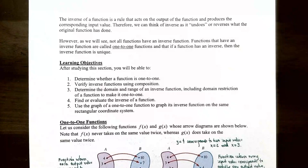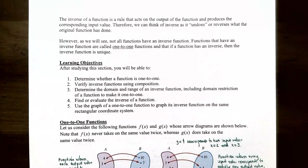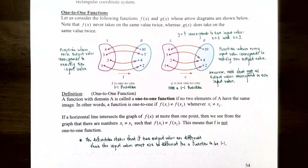In this video, we're going to talk about how to determine whether a function is one-to-one, because one-to-one functions are the ones that have inverses. We're going to verify inverse functions using composition, and then talk about how to determine the domain and range of an inverse function, including the domain restriction of a function to make it one-to-one.